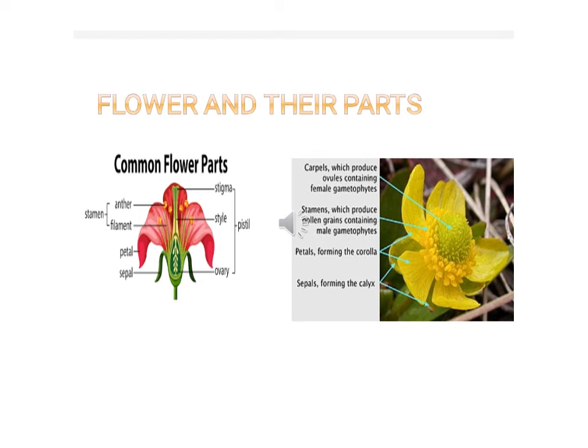We will discuss flowers and their parts and functions. The flower is the most beautiful part of the plant. Different plants have different types of flowers in many sizes, shapes, colors, and fragrances. The flower is the reproductive organ of the plant. It is attached to the stem by a stalk called the pedicel, and the uppermost part of the stalk is known as the thalamus.